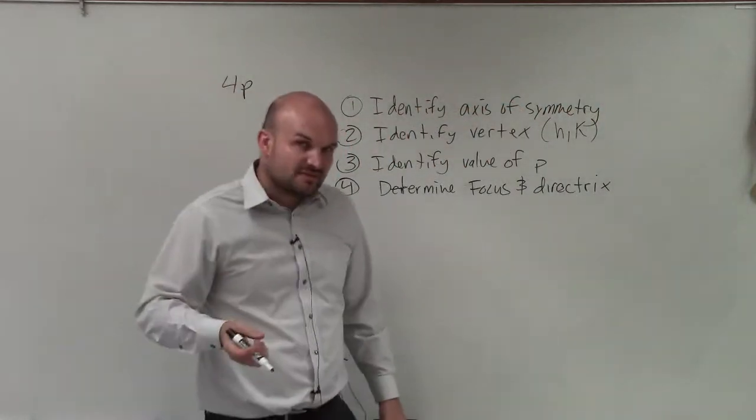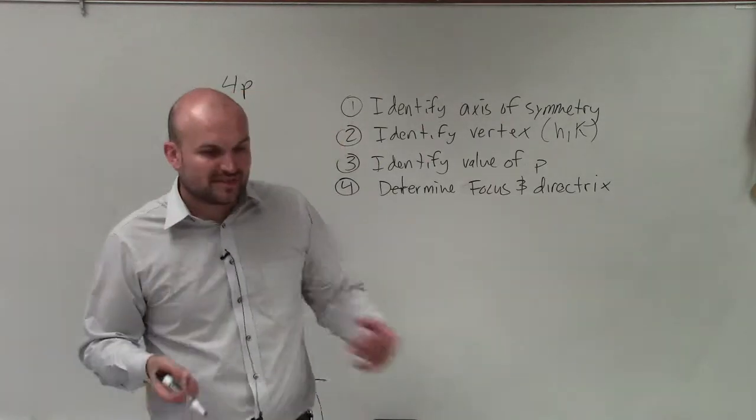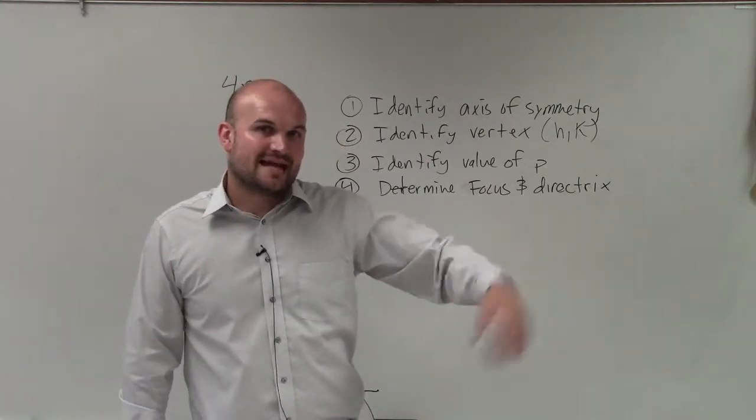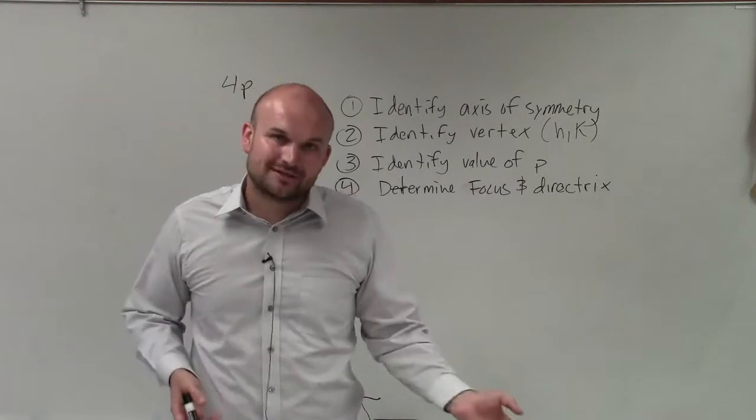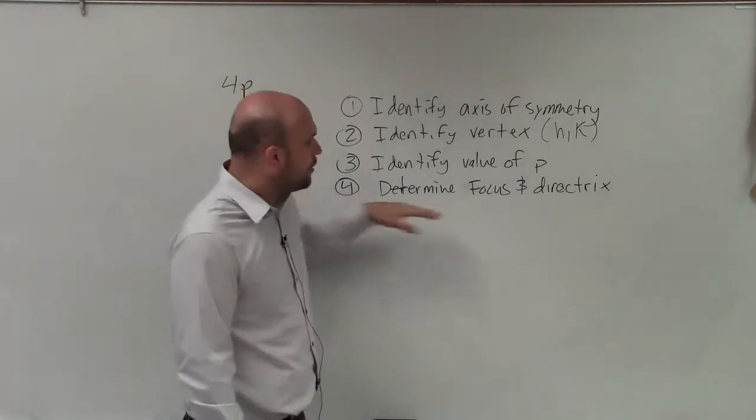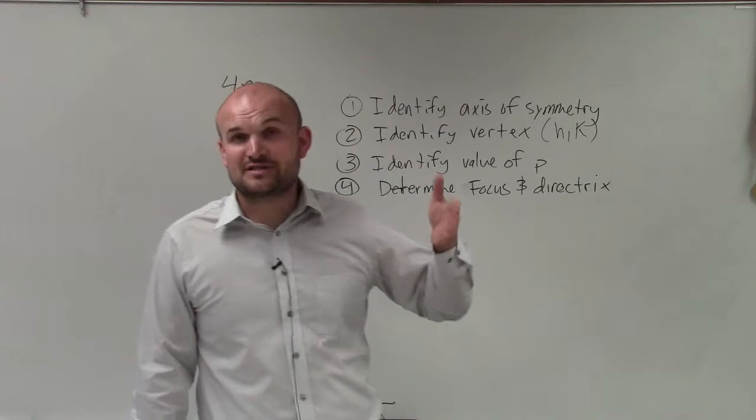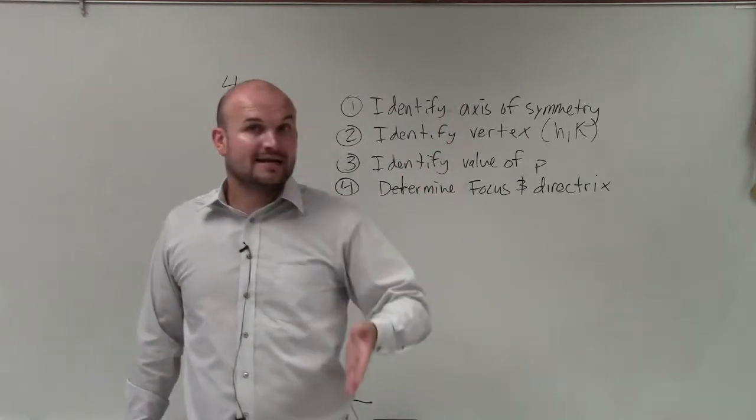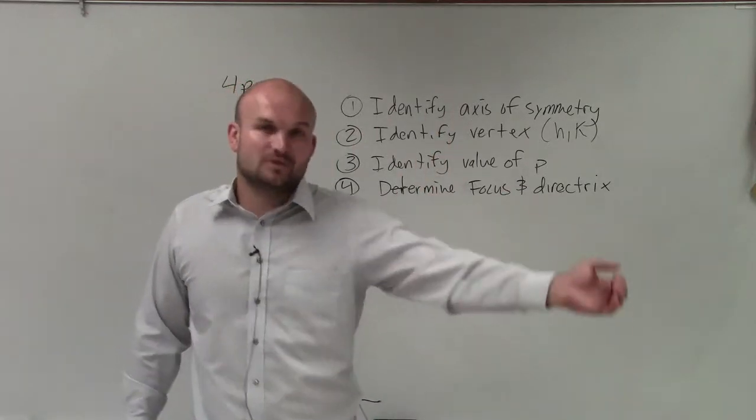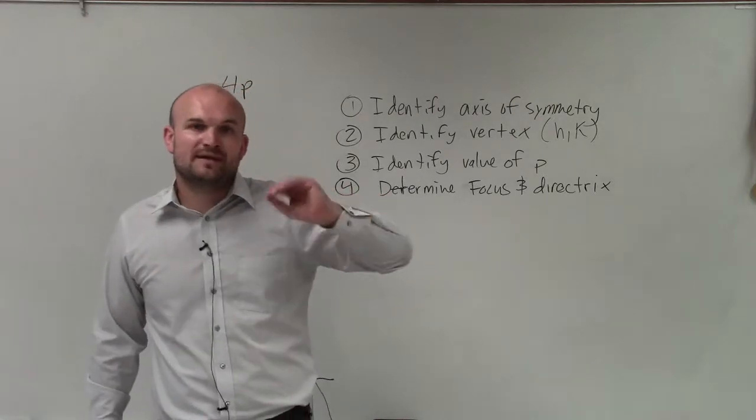And remember, we need to write the equation of the line, and do not get it confused with the axis of symmetry. The axis of symmetry and the directrix are perpendicular. So if I have a horizontal axis of symmetry, my directrix then is going to be a vertical line. And remember, vertical lines are x equals, and horizontal lines would be y equals.